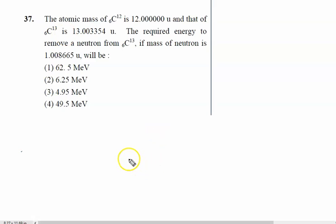The atomic mass of 6C12 is 12.000 units and that of 6C13 is 13.00354 units. The required energy to remove a neutron from 6C13, if the mass of the neutron is 1.008665 units.